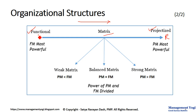In a functional organization, the functional manager is most powerful. The project manager role may not exist, or if it does it will be a part-time role with much less authority than the functional manager. Whereas in a projectized organization, the project manager is most powerful, and the functional manager role, if it exists, has much less authority compared to the project manager.